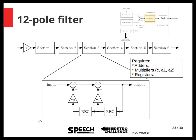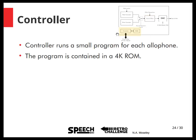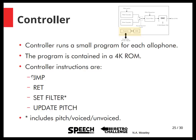We have to control the filter and the source using a controller block, which basically runs a small program for each allophone. The program is contained in a 4KB ROM, and the controller has four instructions: a jump instruction, a return instruction, an instruction to set the filter coefficients which also includes pitch and the voiced/unvoiced setting, and an additional command that updates the pitch only — so the filter stays the same but only the pitch is updated. That's basically all that's needed to generate speech in the SP0256AL2.